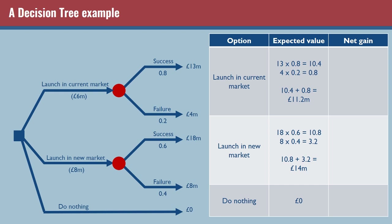It always frustrates me when answers don't express units - like a current ratio written as just 1.4 instead of 1.4:1, or a gross profit margin written as just 47 instead of 47%. Make sure you express the units throughout. For launching the new market: 18 times 0.6 is 10.8, plus 8 times 0.4 is 3.2 - add those together and we get 14 million pounds. For doing nothing, the expected value is zero pounds because we're not doing anything.